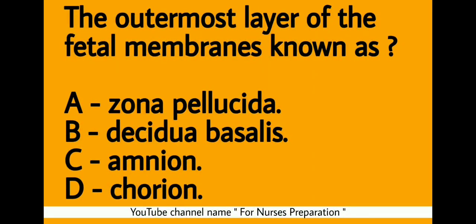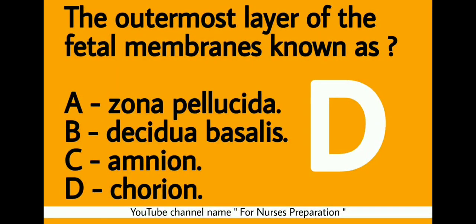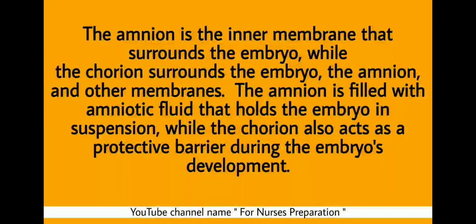The outermost layer of the fetal membranes is known as: option A, zona pellucida; option B, decidua basalis; option C, amnion; option D, chorion. The right choice is option D, chorion. The amnion is the inner membrane that surrounds the embryo, while the chorion surrounds both the embryo and the amnion. The amnion is filled with amniotic fluid, while the chorion acts as a protective barrier during the embryo's development.